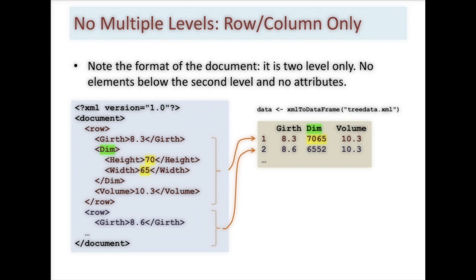This example shows that. In this example we have girth with the sibling node dim for dimension and it has underneath that height and width. So now we have a three level document and note what happens when you read that with XML to data frame. It is going to concatenate the values in the child nodes underneath dim, which is clearly not what you intend, would make it impossible to parse, impossible to use. So bottom line, XML to data frame only works on simple type of two-dimensional structures of XML documents.